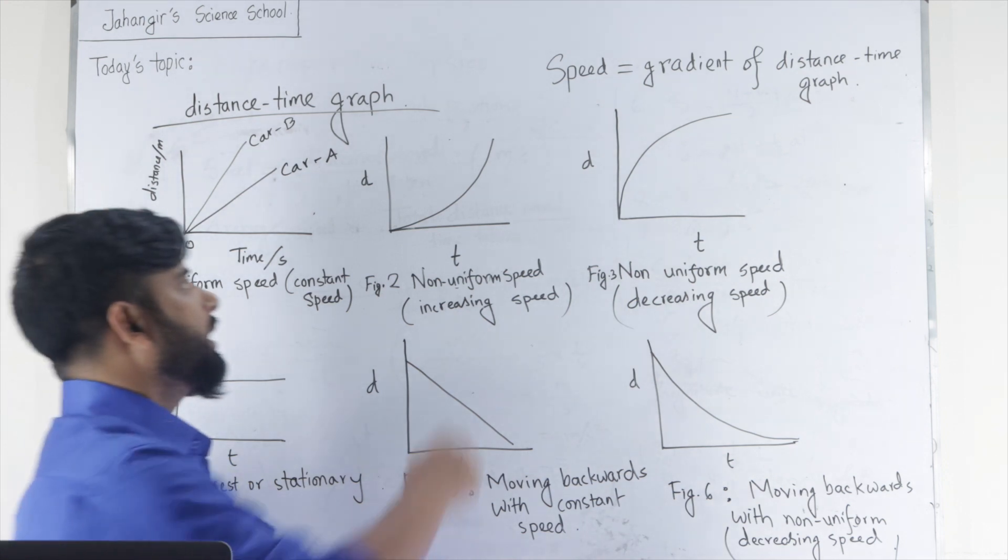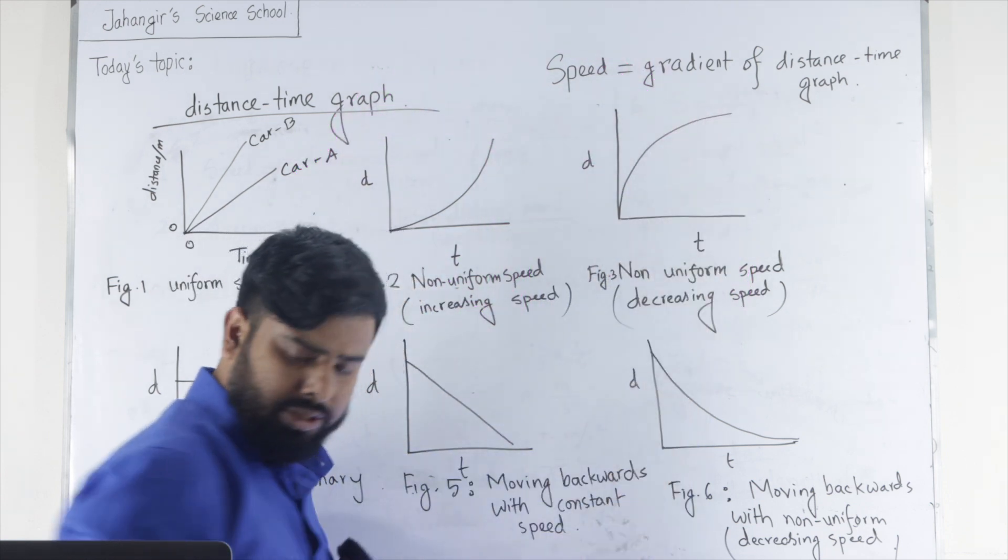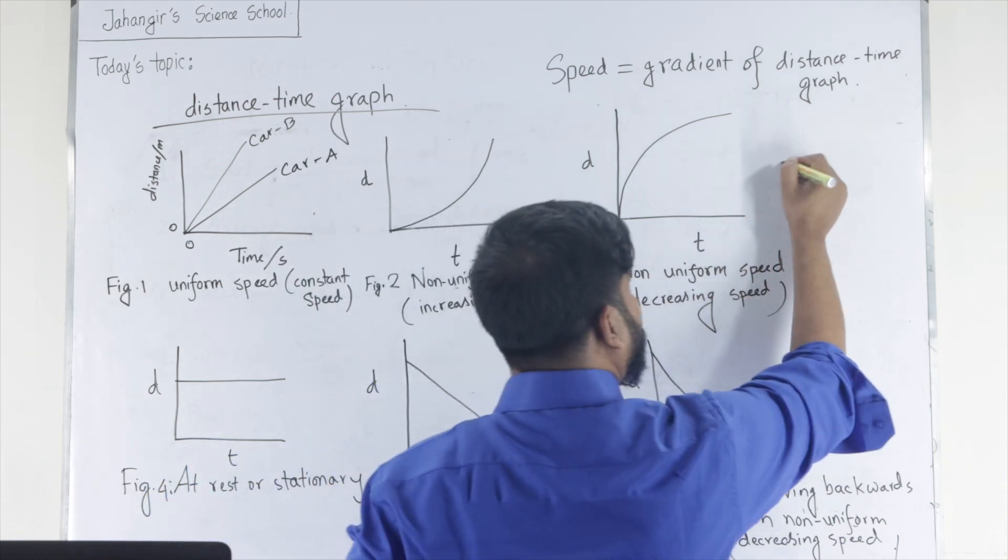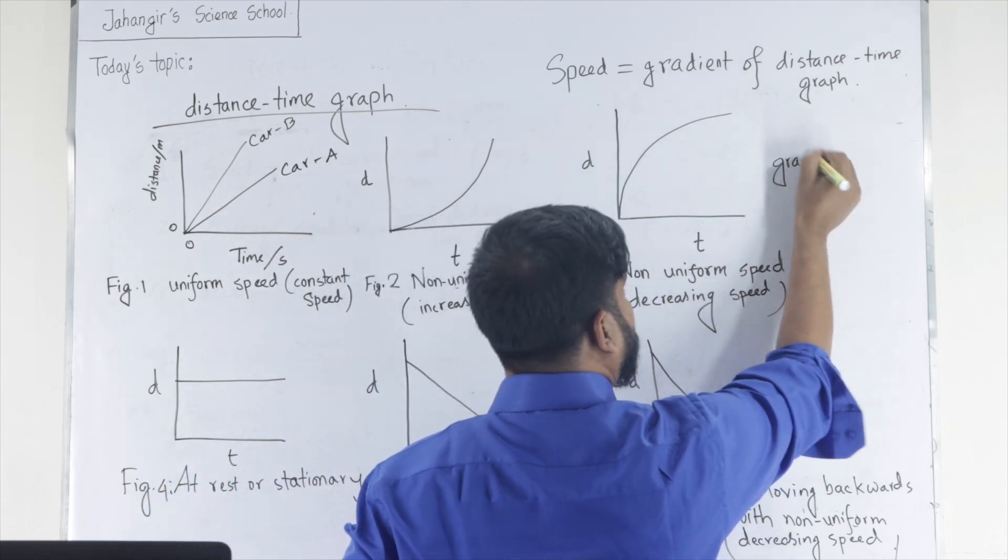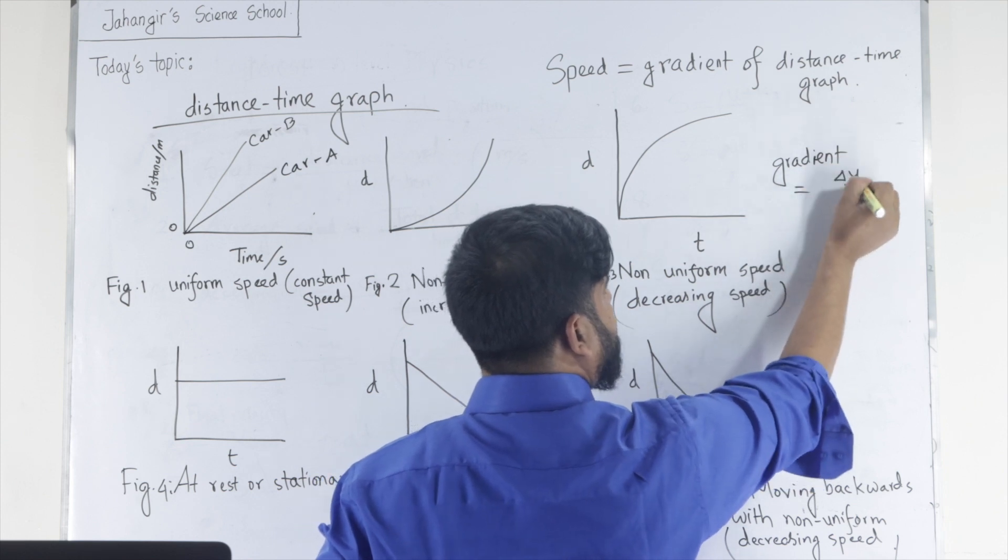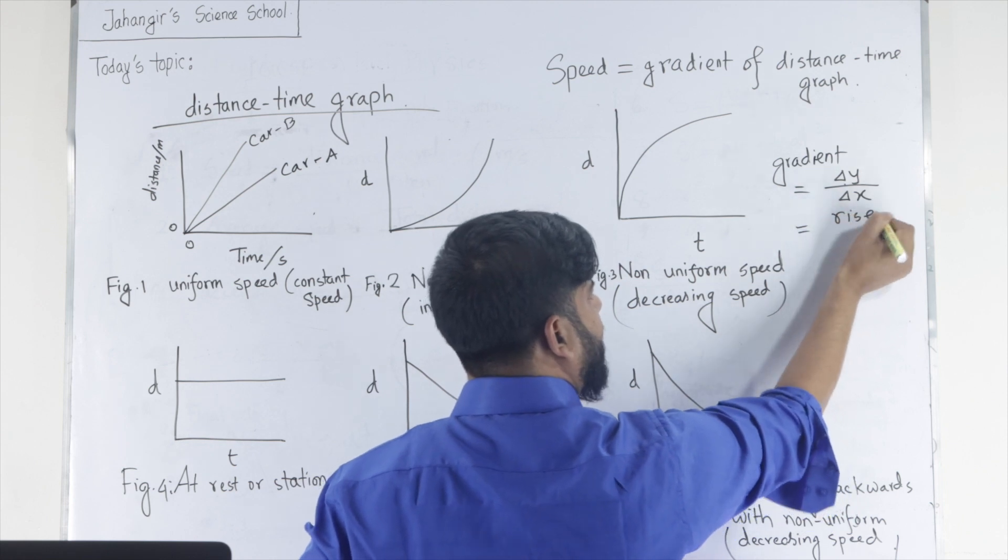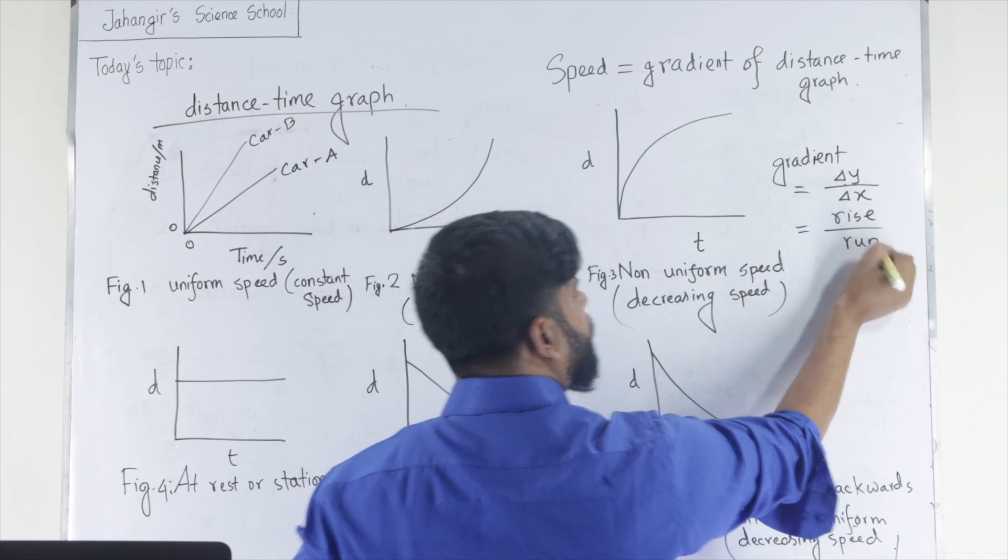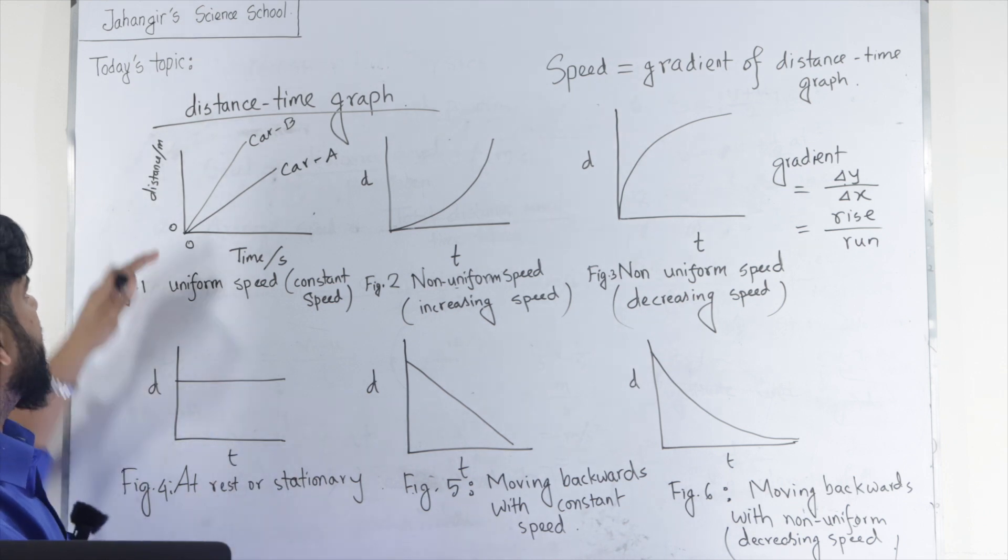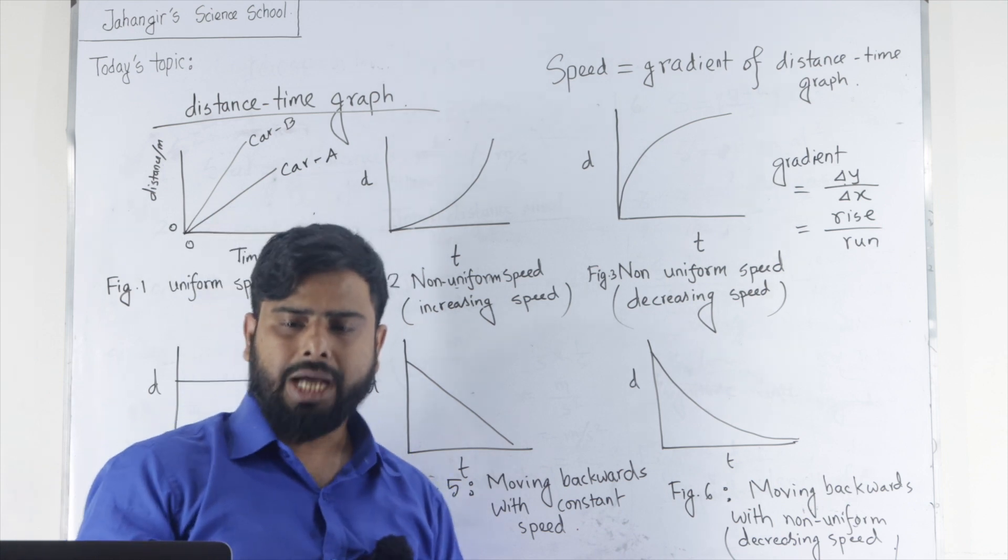Most important thing, speed equal to gradient of the distance time graph. What is the meaning of gradient or slope? Gradient means change in y-axis divided by change in x-axis. That means rise by run. So, gradient or slope equal to rise by run. Here, change in distance divided by change in time.